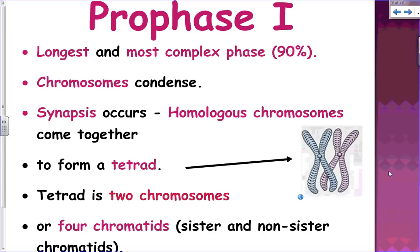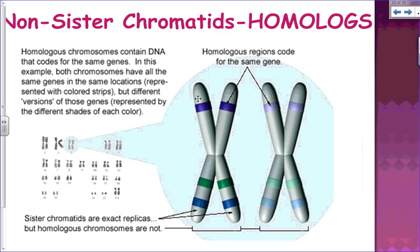Synapsis occurs — homologous chromosomes come together to form a tetrad. A tetrad is two chromosomes or four sister chromatids. The sister chromatids come from DNA replication, and there are also non-sister chromatids from the homologous set of chromosomes. Non-sister chromatids are called homologues, and a homologous chromosome contains regions that code for the same genes.